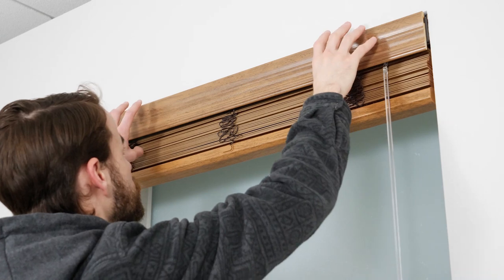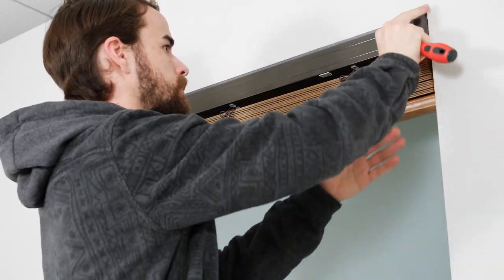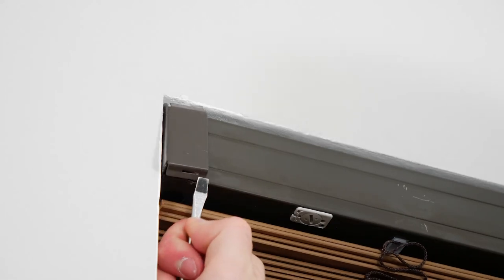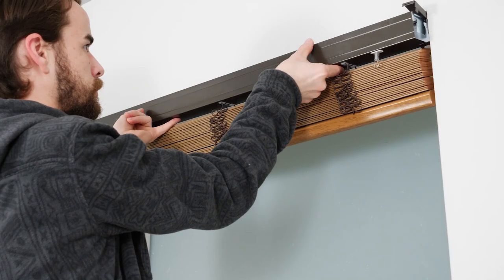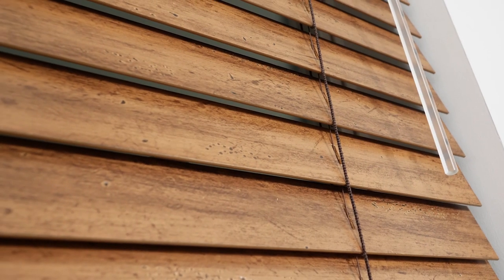If you need to remove your blinds, simply remove the valance and the wand. Then, open the hinges of the brackets using a flat head screwdriver. Slide the headrail out from the brackets and you're done. We hope you enjoy your beautiful new blinds from Select Blinds.